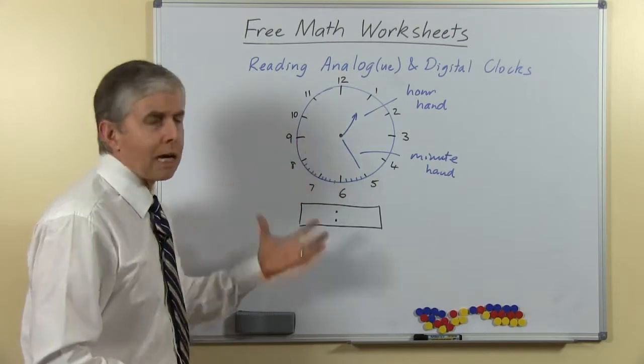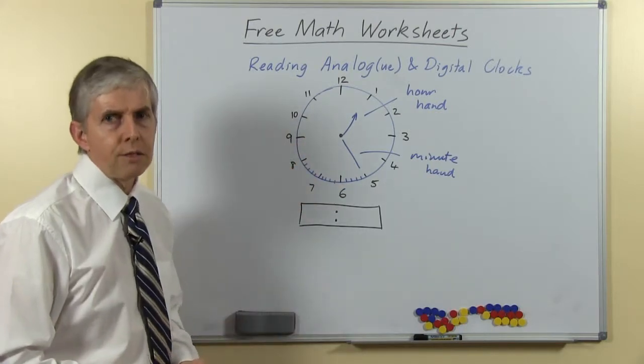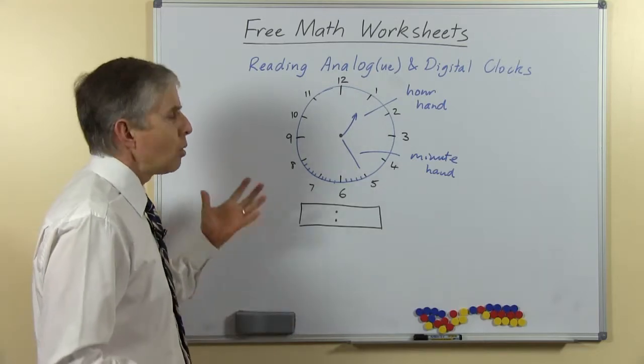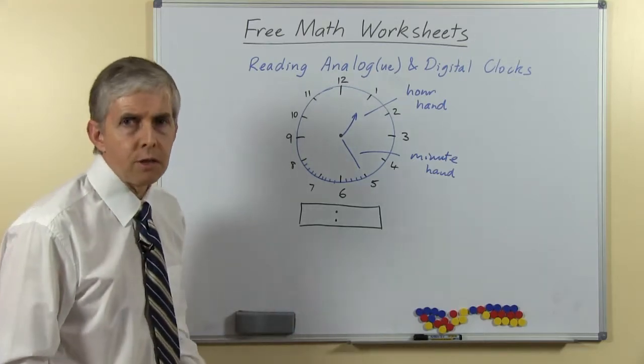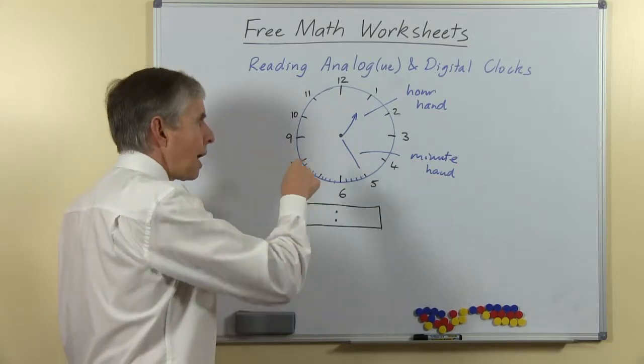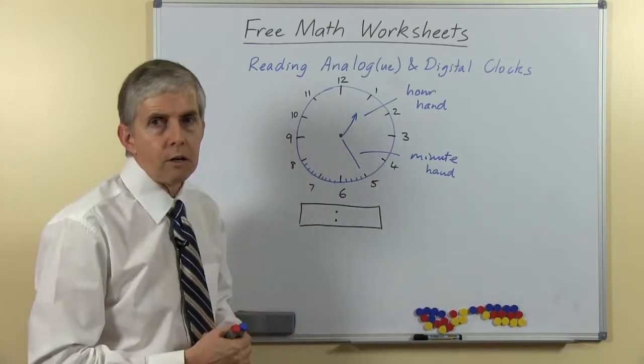So the device, the analog clock is a complicated device. As adults we've got used to it, but children, it's no wonder they find it rather confusing. Because it's measuring two different units, with two different hands and they keep going round and round, you know, repeatedly.